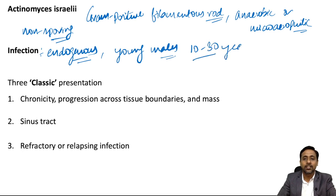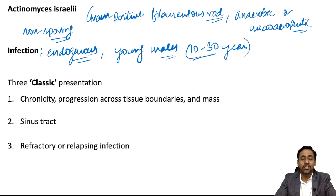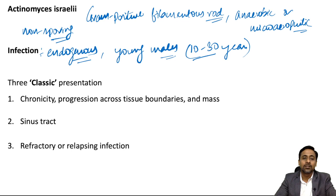In this question, the patient's age is approximately 30 years and there is a history of dental extraction, which indicates that the infection is endogenous in origin. The infection in the submandibular area actually reaches from the colonizers present in the oral mucosa, as Actinomyces israelii is a part of the commensal flora of the oral cavity.